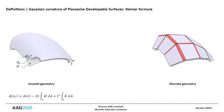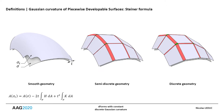Gaussian curvature is localized in the vertices, whereas mean curvature is localized in the edges. The faces have no curvature. In our case, and in an analogous way, it is enough to observe the nature of the array of variation at the vertices and edges to establish the value of Gaussian and mean curvature.